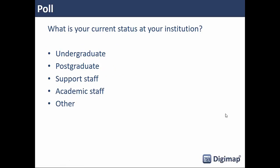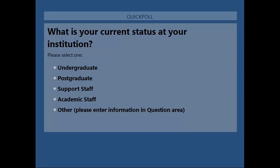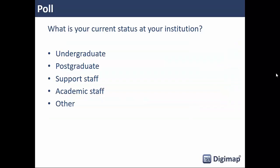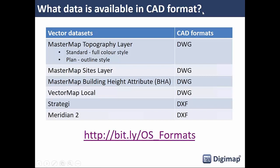We've got quite a lot of undergraduates, postgraduates, some support staff and academic staff attending today. That gives us a good idea of who we've got. So the first part is what data is available in native CAD formats — we're going to look at vector data, terrain and height data, and raster data.